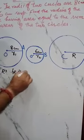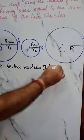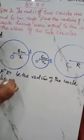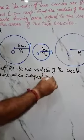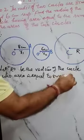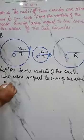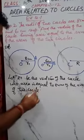the radius of the circle whose area is equal to the sum of the areas of two circles.